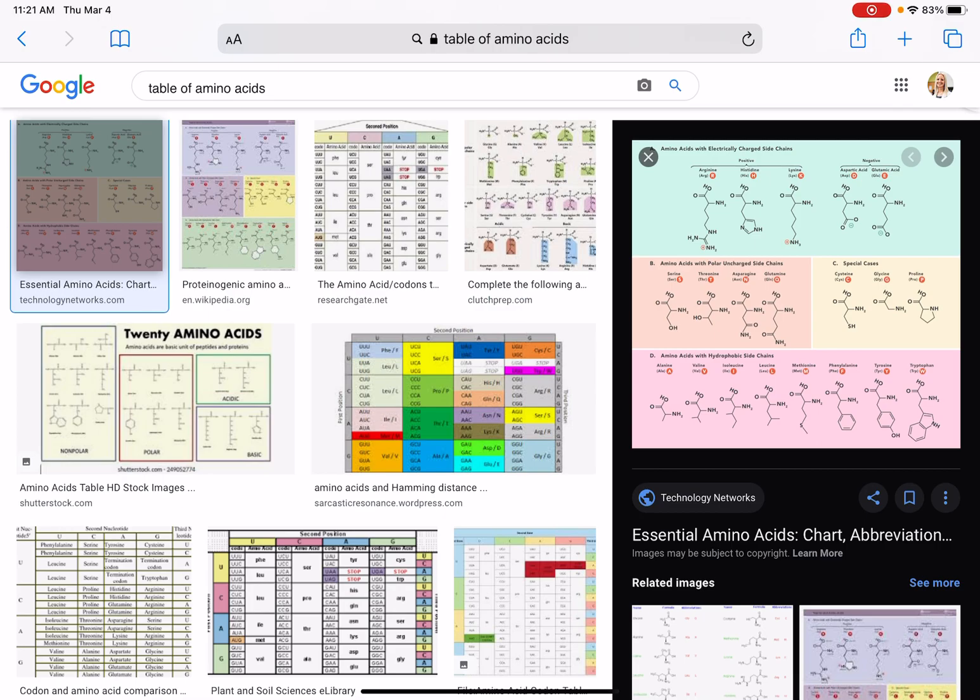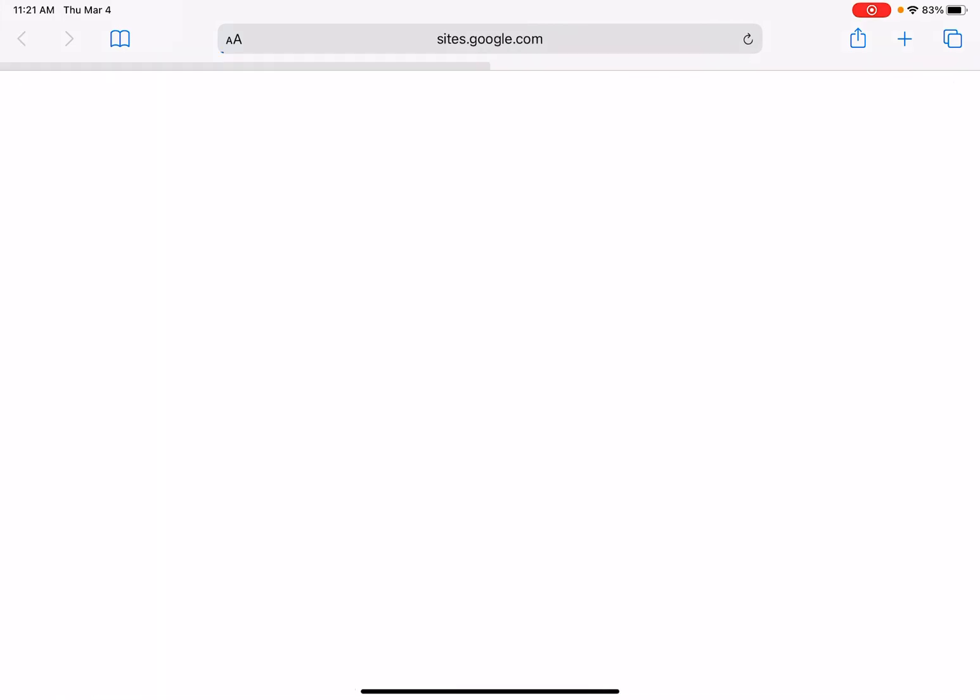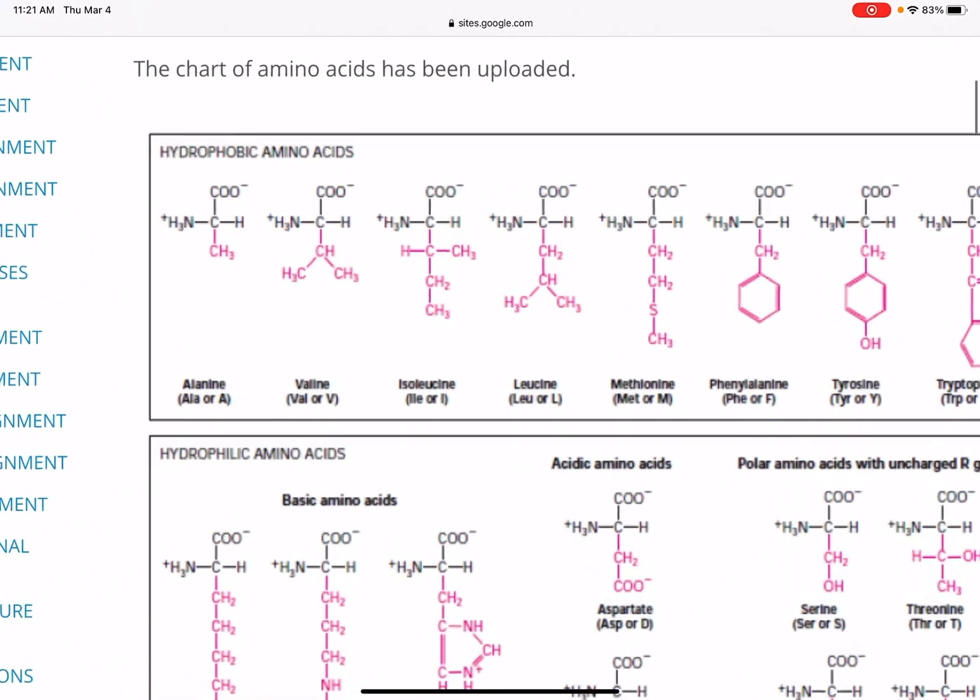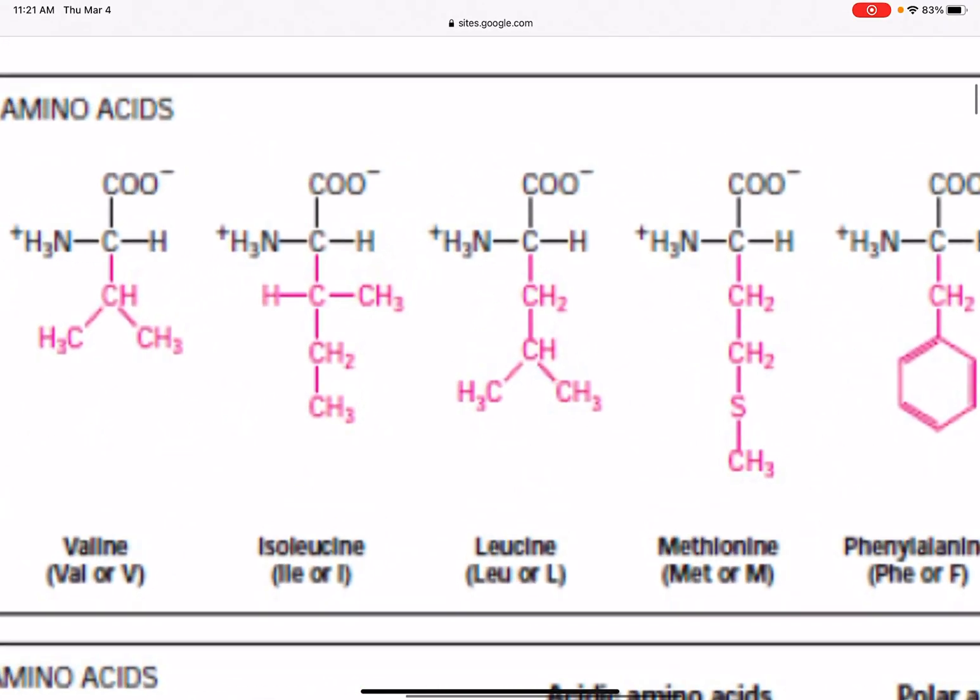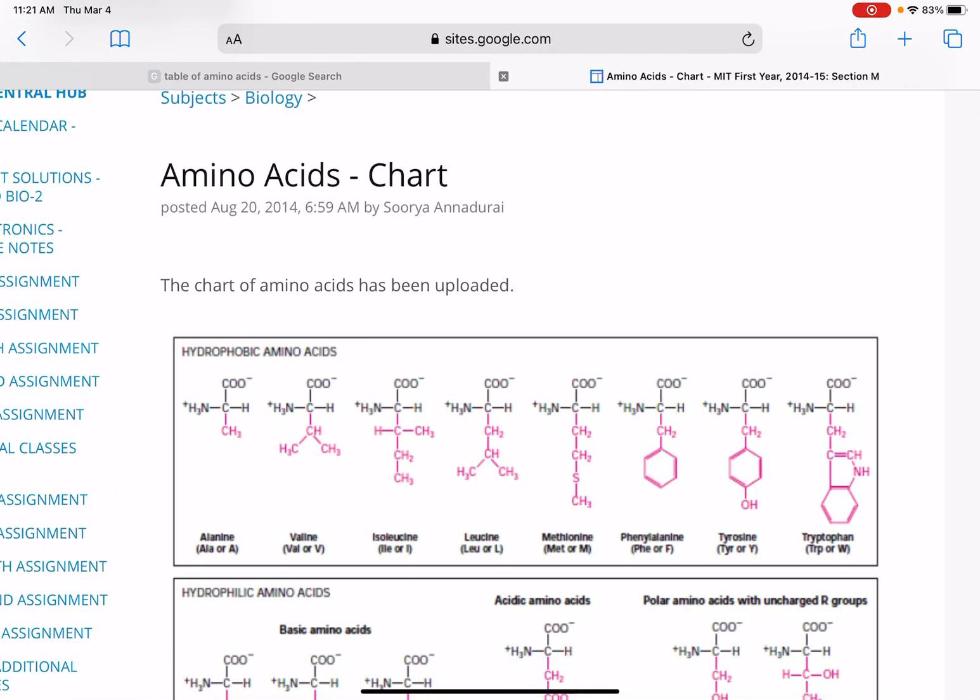Something that you may have noticed at that last table that I pulled up is that the structure of the amine group and the structure of the carboxylic acid group look a little bit different than what I drew on the slide. So instead of a COOH, it has a COO-, and instead of an NH2, it has an NH3+. Let's talk about that a little bit.